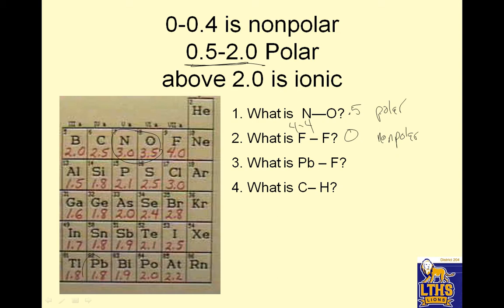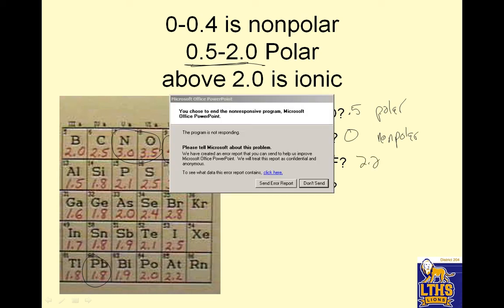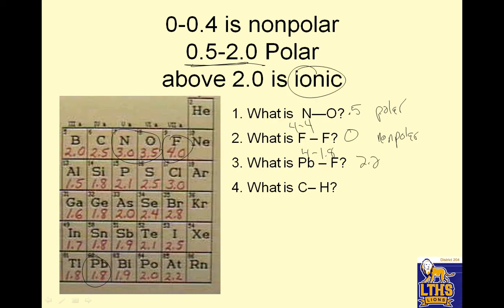And lead, Pb, 1.8 to fluorine — the difference between those two is 4 minus 1.8, which is 2.2, and that would be ionic. What is C to H? H is 2.1. So carbon is 2.5, hydrogen is 2.1, so that means this is 0.4. I forgot to write down what 2.2 meant: ionic. And 0.4 means nonpolar.